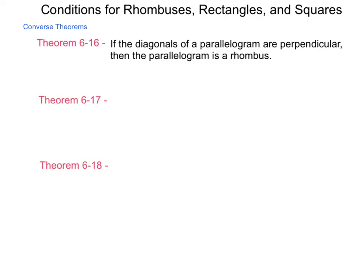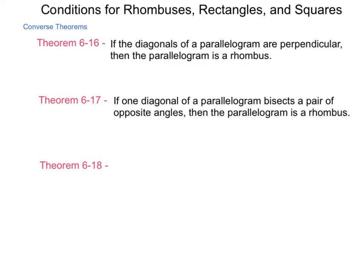Theorem 6-17 is also a converse. It states if one diagonal of a parallelogram bisects a pair of opposite angles, then the parallelogram is a rhombus.